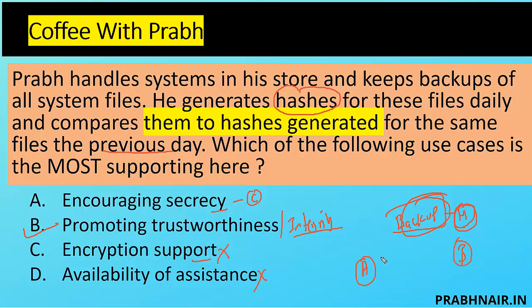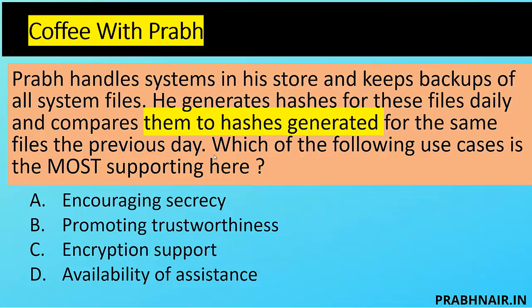If A sends B a backup file along with a hash value, and tells B to download the backup, scan the data, and compare against the hash sent — if both hashes match, it confirms the data received is the same data that was sent. By hashing, we can promote the correctness and trustworthiness of data. This question is also about the same concept. Therefore, the answer is B — to promote the trustworthiness of data.